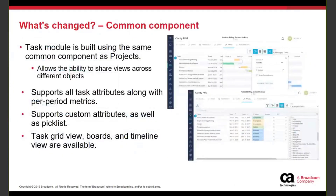The task module available in the custom investment is built on the same common component as the projects. This allows end users to save and share their views, see data in per-period metrics, and add any columns defined in the task object, which can also include any pick list. You can manage your pick list to be included in your view and save that in your view itself. Because it is built on the common component, the three views in your task — the grid view, the boards view, and the timeline view — are all available to be leveraged.